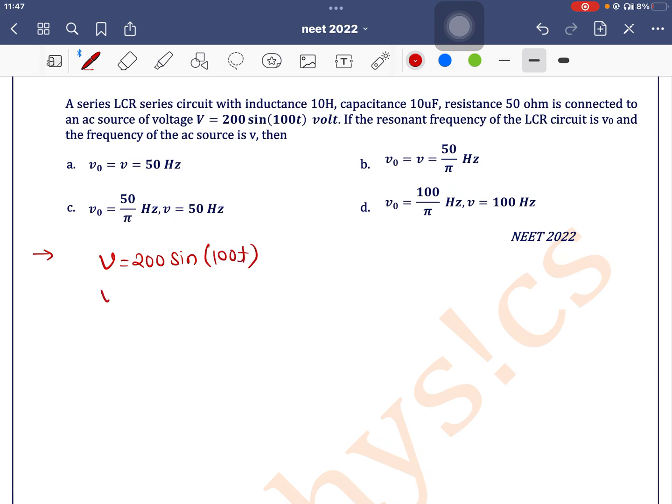If we compare this with the standard equation V equals V0 sin of omega T, omega is given as omega equals 100. If the resonant frequency of circuit is nu0 and the frequency of AC source is nu, then 2 pi nu equals 100, so nu equals 50 divided by pi.